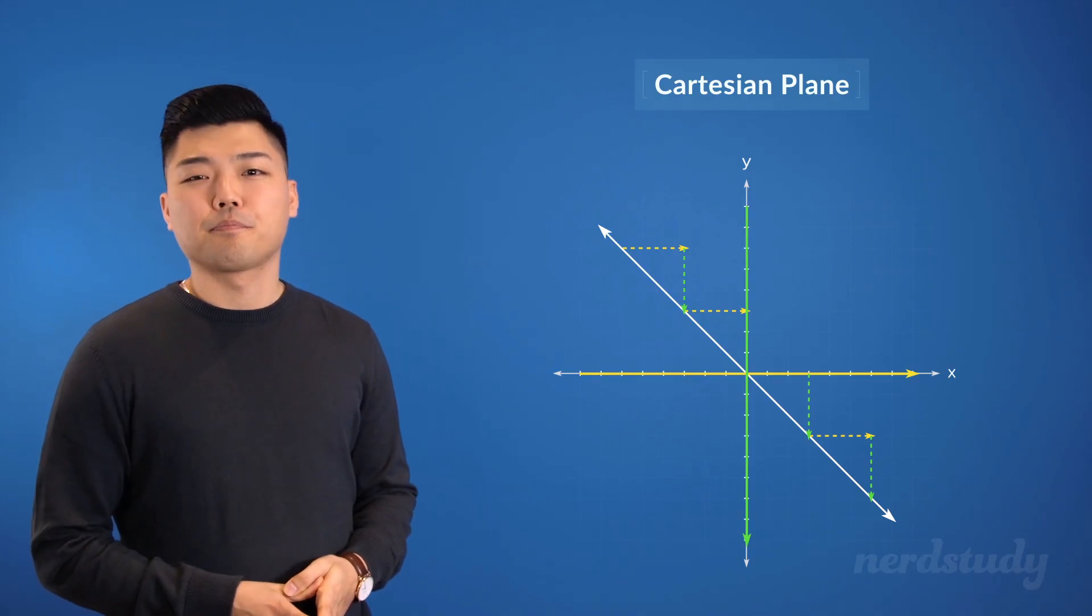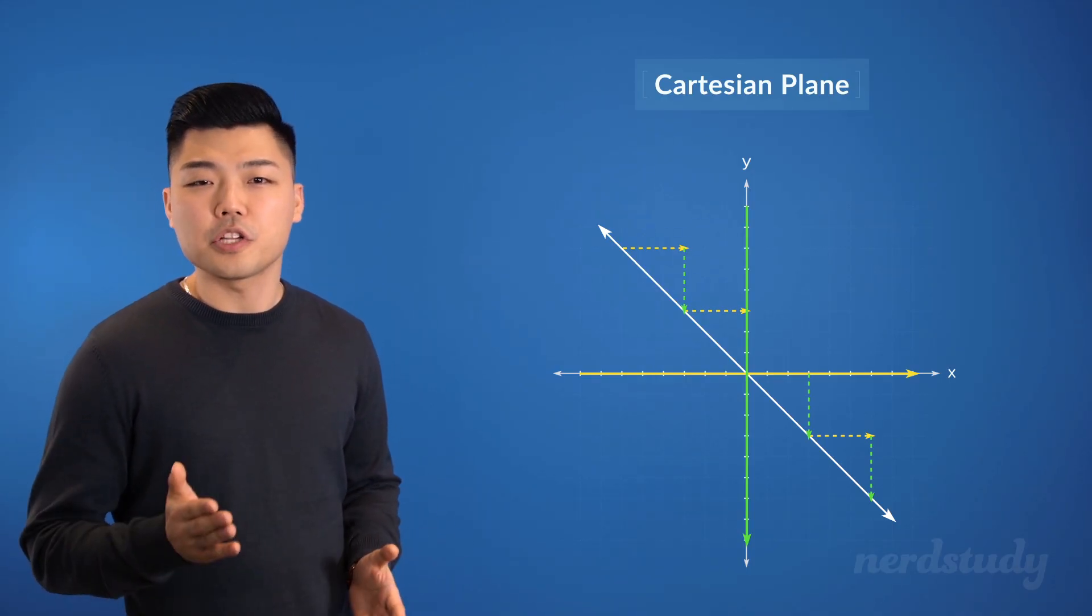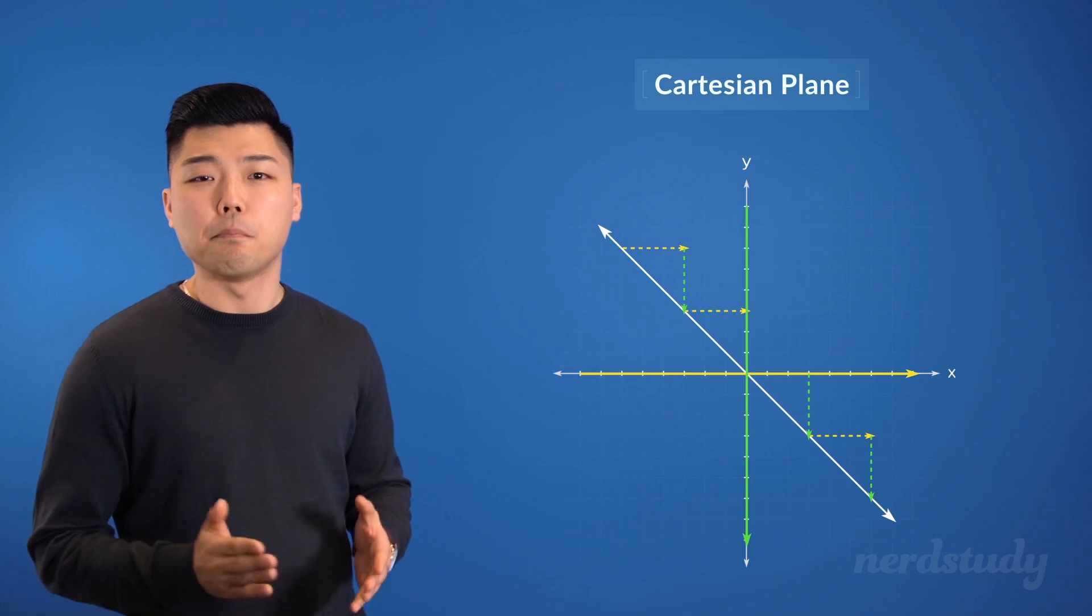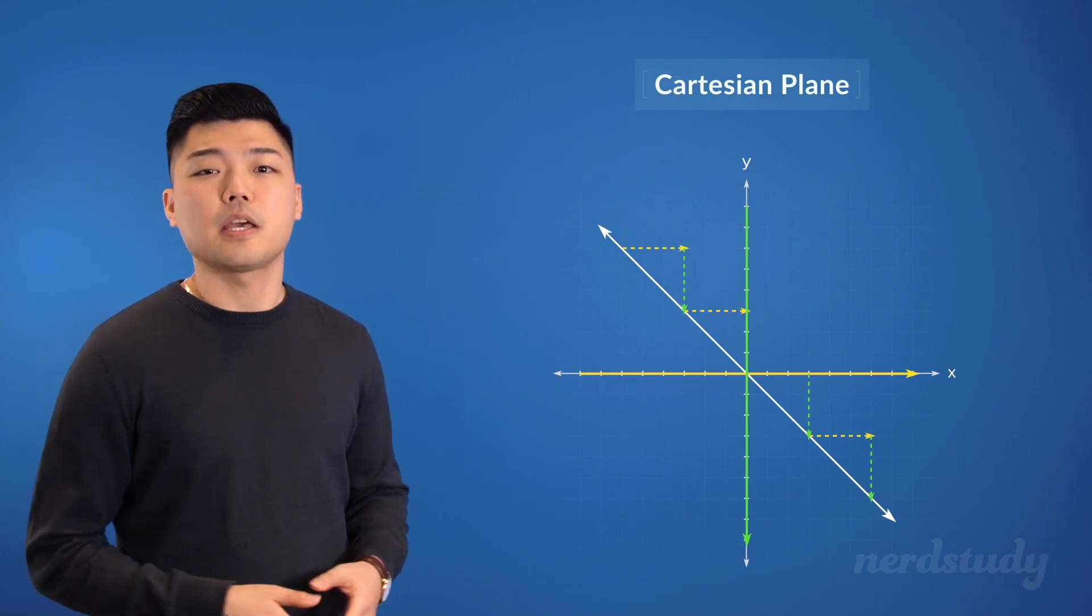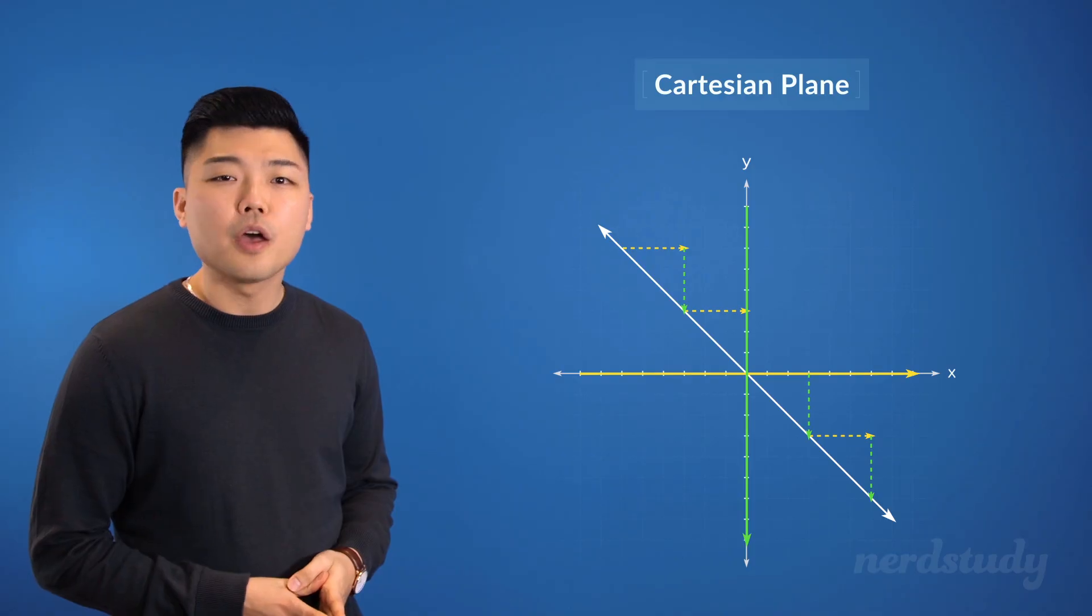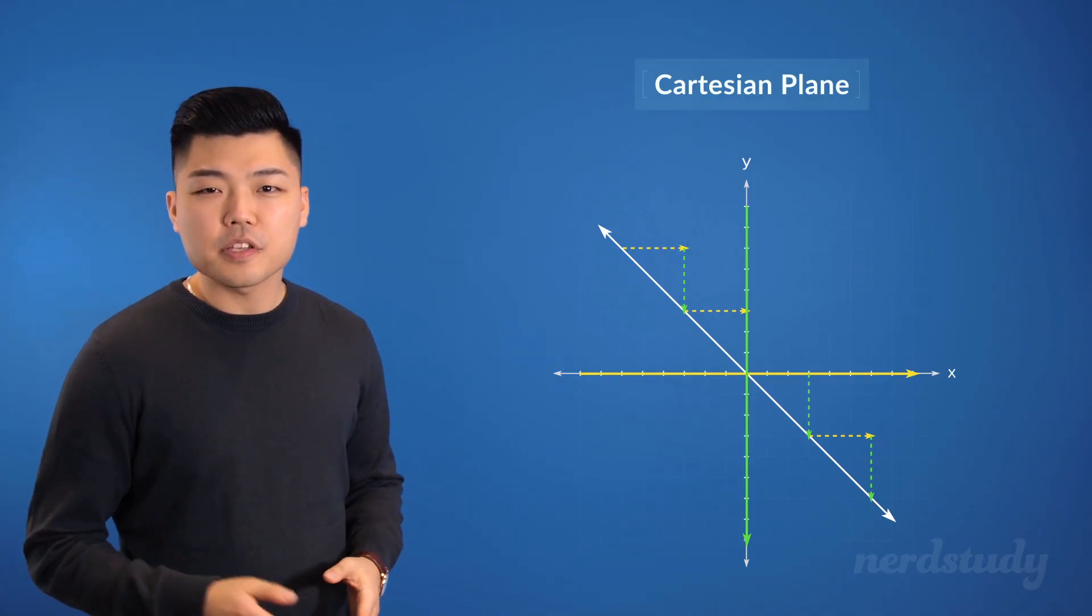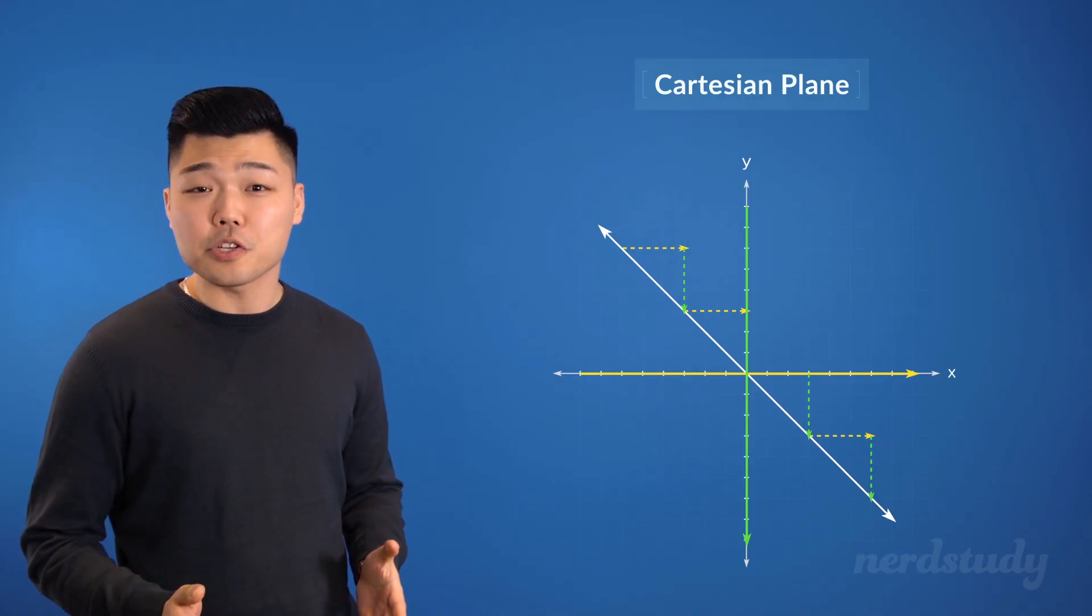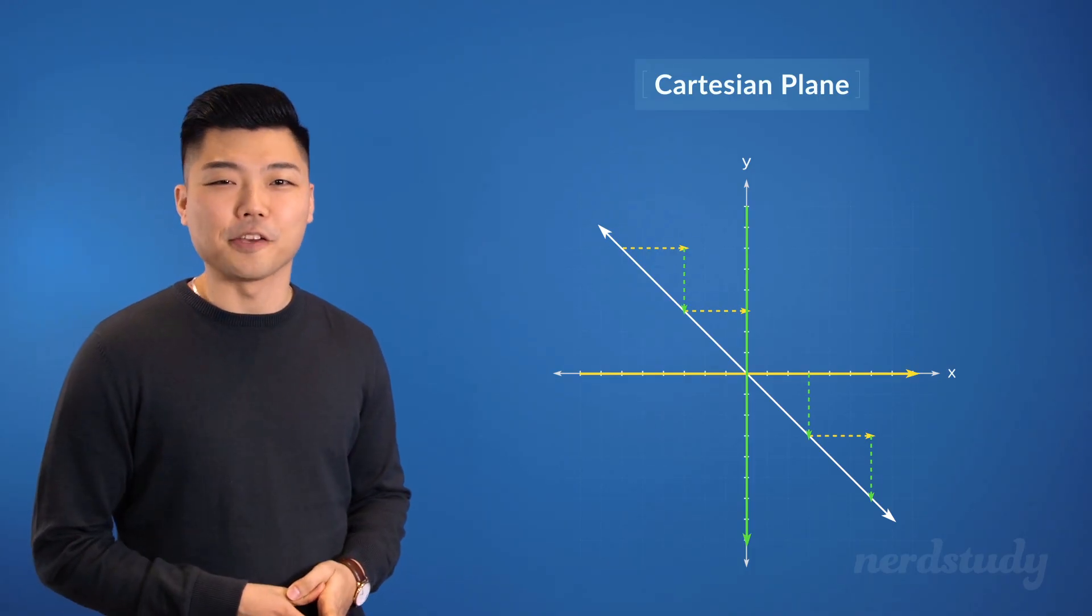So, how does the line graph on the Cartesian plane fit in with both the linear equation and the table of values anyways? Well, let's pull up the earlier example where we had both the equation and the table of values.